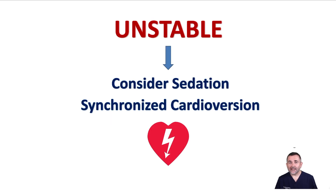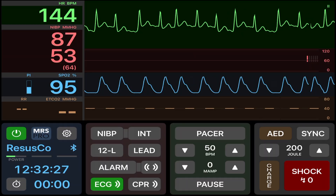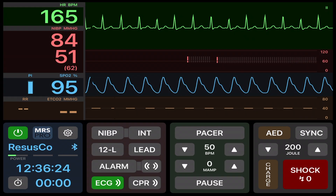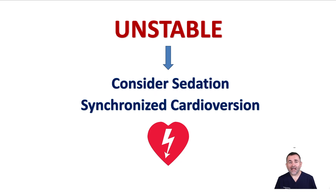If unstable, immediate cardioversion is indicated. To maximize the success of the first shock, the 2025 guidelines recommend using at least 200 joules for atrial fibrillation and atrial flutter. For monomorphic VT and narrow complex tachycardia, the recommendation is 100 joules. If time permits, establish IV access before cardioversion and administer sedation if the patient is conscious. If the patient is extremely unstable, do not delay cardioversion.